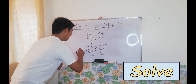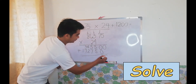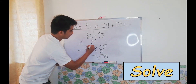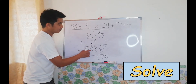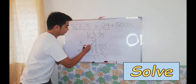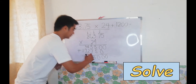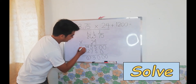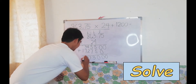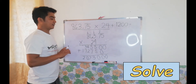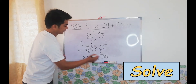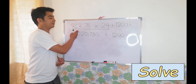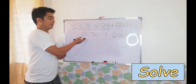Now let's proceed to the addition of our partial products. 0 plus 0 is 0. 5 plus 5 equals 10 — write 0 ones and regroup 1 ten. 1 plus 5 equals 6, plus 7 equals 13 — write 3 ones and regroup 1 ten. 1 plus 4 plus 4 plus 2 equals 7. 3 plus 7 equals 10 — write 0 ones and regroup 1 ten. Finally, 1 plus 1 equals 2. Then we count the decimal places: 1, 2. So our result is 20,730.